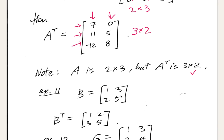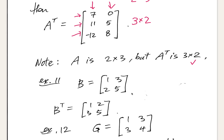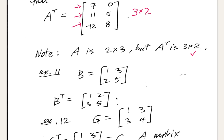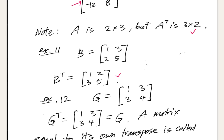For square matrix B = [1, 3 / 2, 5], taking its transpose leaves the dimensions unchanged at 2 by 2. B transpose: the first row 1, 3 becomes the first column, and 2, 5 becomes the second column written up and down — so it's still 2 by 2.